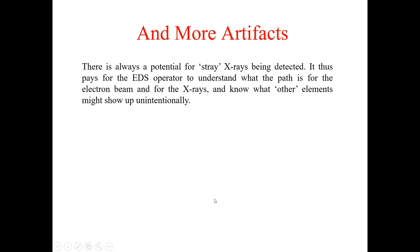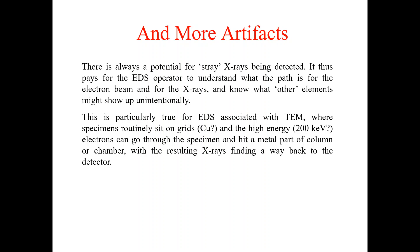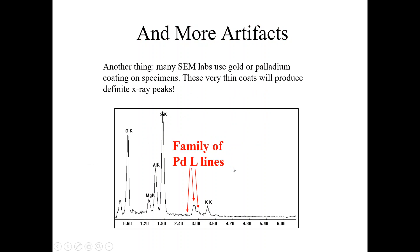More artifacts: there is always potential for stray X-rays being detected. It pays for the EDS operator to understand the path for the electron beam and X-rays and know what other elements might show up unintentionally. This is particularly true for EDX associated with the TEM, where specimens are routinely set on a copper grid. In TEM the energy is very high — approximately 200 keV — so electrons can pass through the specimen and strike a metal part of the column or chamber, with resulting X-rays finding their way back to the detector.